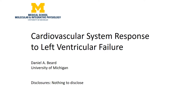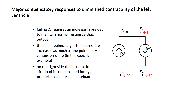Even though we're going to be thinking about an acute event, the thinking that goes into understanding this acute event will translate to chronic conditions. What we want to understand are the major compensatory responses to diminished contractility of the left ventricle.